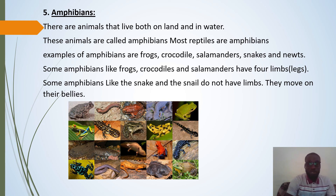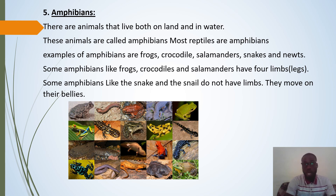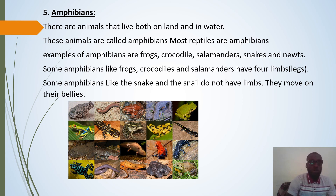We've been able to identify what a living thing is and some examples of living things. We've also identified what a non-living thing is and some examples of non-living things. We then looked at animals as living things and their categories: mammals, amphibians, reptiles, birds, and insects. This brings us to the end of the lesson. Hopefully we shall meet another time — bye bye!